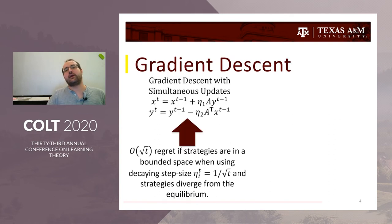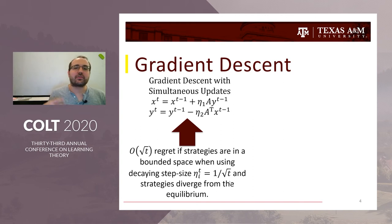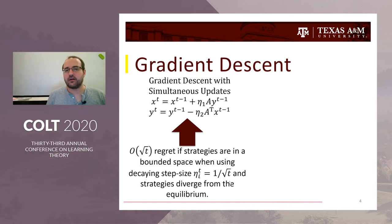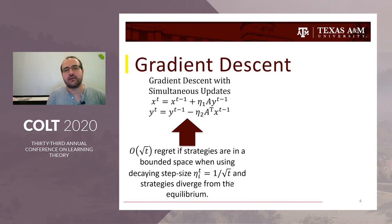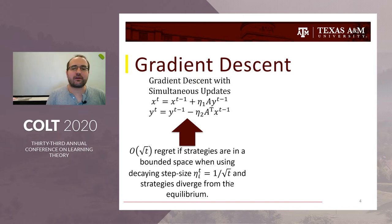The standard approach is gradient descent with simultaneous updates, where you update according to your payoffs in the previous iteration. This algorithm has some nice properties: regret grows at a rate of root t. While growing regret sounds bad, it's considered nice if it's sublinear, because the time average regret will decay at rate 1 over root t, implying time average convergence to the optimal value. However, this proof relies on decaying step sizes at rate 1 over root t.